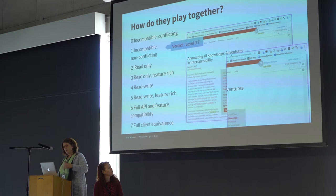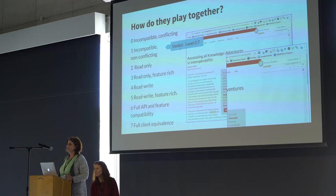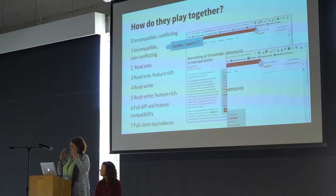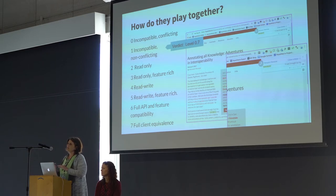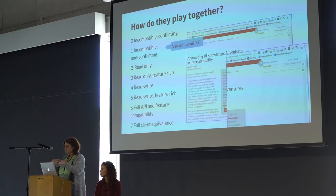We laid out a simple roadmap: incompatible and conflicting at the worst end, full client equivalence at the best. Right now we're at about 0.7 — you can make both tools work on the same page but they're not entirely compatible. What's really interesting is that I use multiple clients because they're specialized for different things. Pundit is for deep semantic annotation, very important in the scientific realm. I switch to another client for other annotation types. Whether all those functionalities should be in one tool is really the work of the coalition.